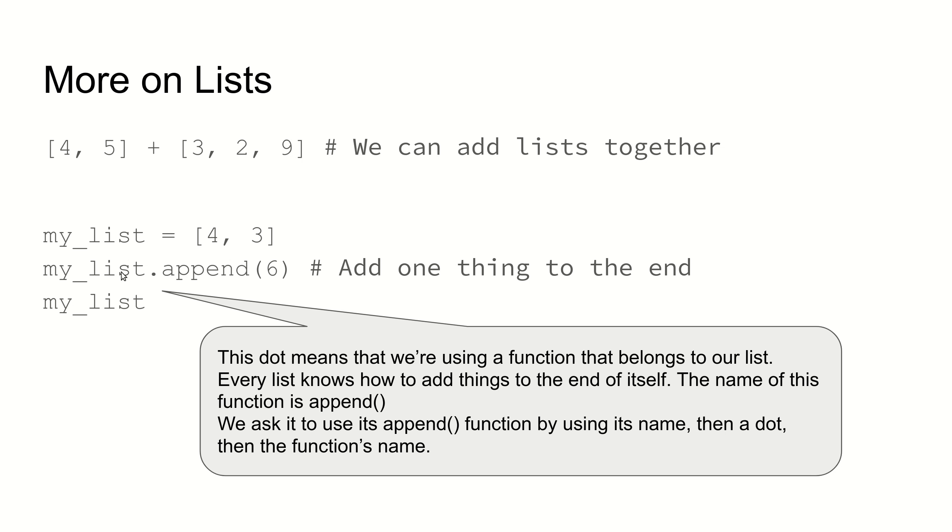One note here, because we haven't done this before, is that when you have some variable and you put a dot after it, that allows you to call functions that belong to that variable's type. So lists have lots of different functions that we'll see more of later. Similarly, other Python types, like strings, also have some functions that you can call, like converting them to uppercase or to lowercase.